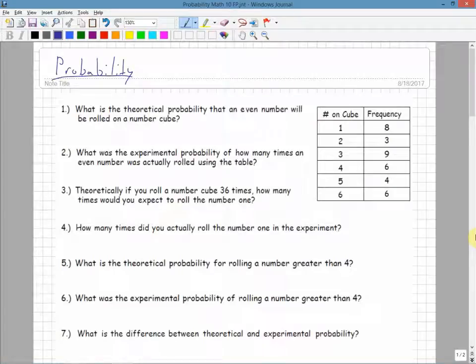For probability, we're going to look at both theoretical and experimental probability. The first question has a chart. I have numbers on a cube, 1 through 6, so it's like a die.